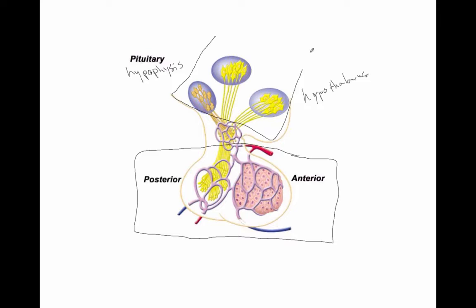The hypothalamus is below the thalamus. So our thalamus is sitting up here, it has its interthalamic adhesion, and in between the hypothalamus and the hypophysis we have this stalk connector referred to as the infundibulum.